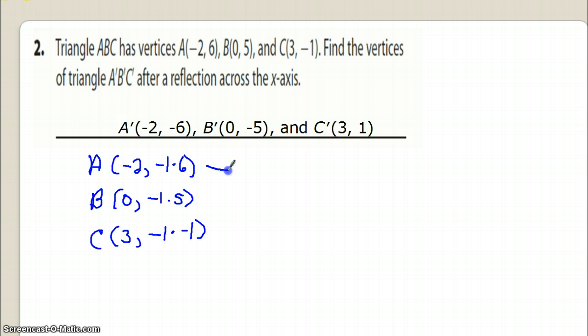Okay, so doing this, these will give us our image, and here we should come up with A prime, then here we should come up with B prime, and then here we should come up with C prime. Alright, so if we're going to leave x alone, so -2 stays the way it is, let's go down to B, 0 stays the way it is, and at C, 3 stays the way it is.